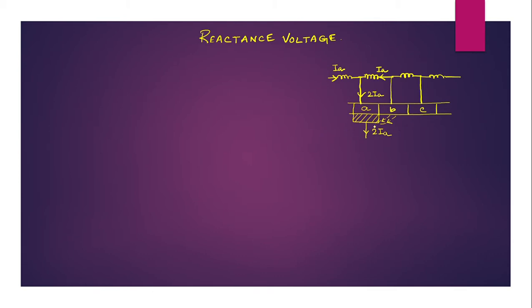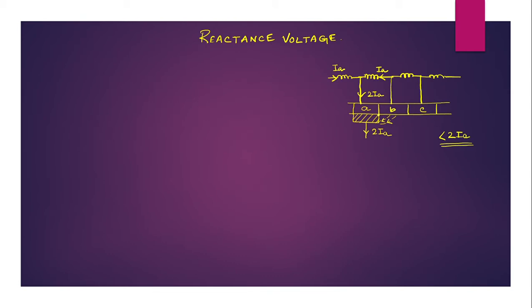This is the last image from the previous video. We know that 2i amount of current goes through segment A as the brush is placed just below A. In practical conditions, this doesn't happen — 2i amount of current does not go through segment A. The current that actually flows through segment A is less than 2i, and the residual current flows through segment B, which is just touching or near the brush.